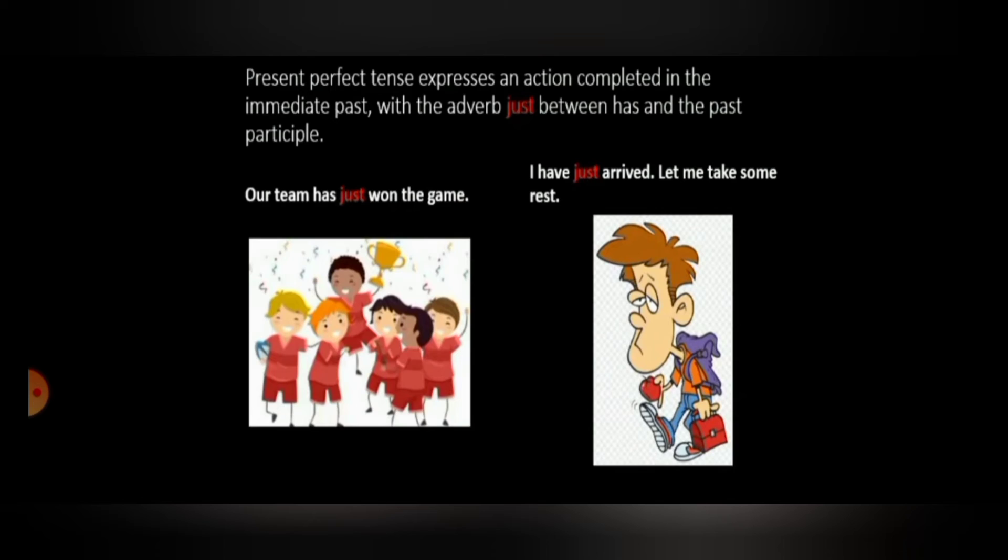The next kind. Present perfect tense expresses an action completed in the immediate past with the adverb just between has and the past participle. Here, as in the previous example we studied, since is used, here just will be used. So, let us see how we can use this tense, present perfect tense in the examples. Our team has just won the game.